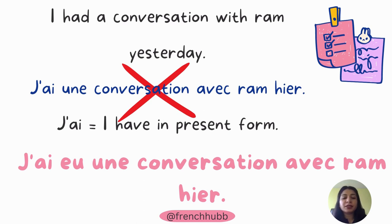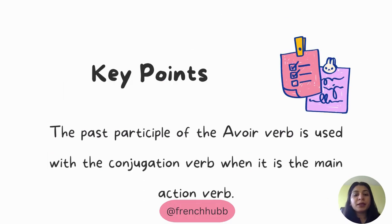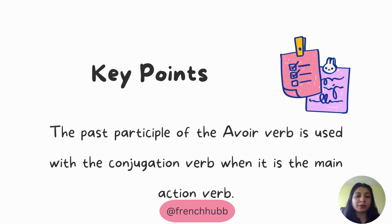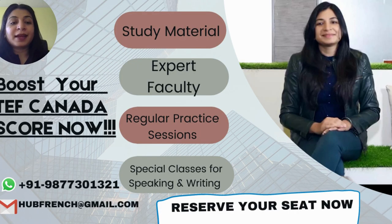The key point is: the past participle of the avoir verb is used along with the conjugated form of avoir when avoir is the main action verb. If my main action is expressed with avoir, I must use its past participle. I will not skip the past participle just because I am already conjugating with avoir.